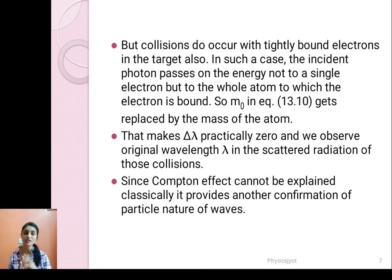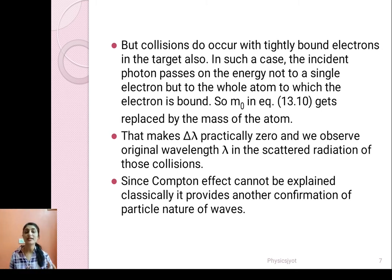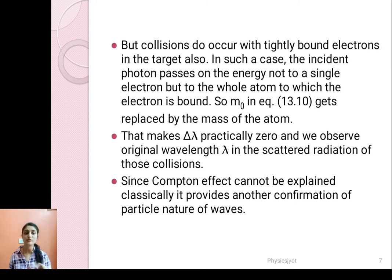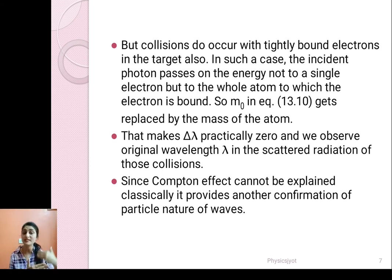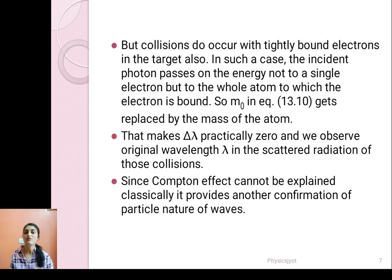Collisions also occur with tightly bound electrons in the target. In such a case, the incident photon passes on energy not to a single electron but to the whole atom to which the electron is bound. Hence in the expression for Compton effect, M0, the mass of the electron, should be replaced by the mass of the atom. We have delta lambda equals H upon M0 C times (1 minus cos theta). When M0 is replaced by the much larger mass of the atom, delta lambda becomes practically zero, and we observe the original wavelength lambda in the scattered radiation — this is the reason why we get the unmodified line.